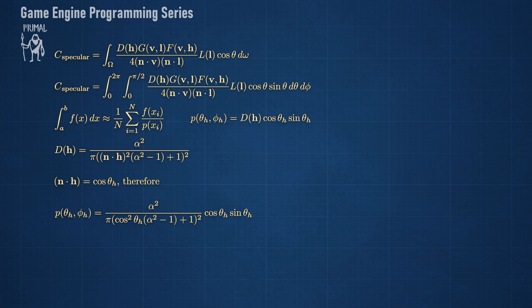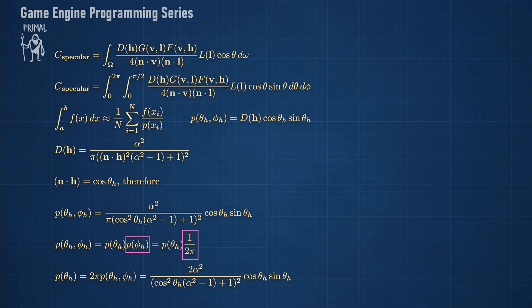We know from the previous video that we can split the PDF into two functions that depend on each angle where we can simply use 1 over 2 pi for p of phi. From this we can derive p of theta.